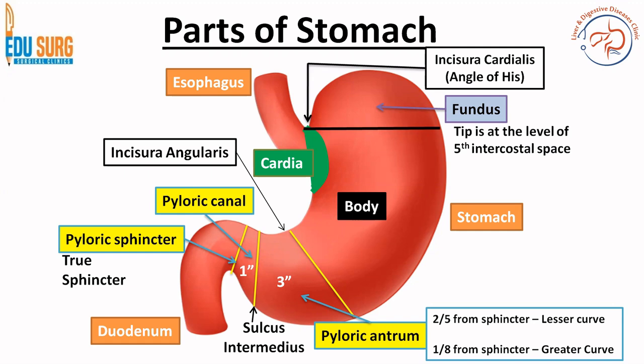So if you are asked parts of stomach, you have to talk in terms of: the cardia which is the beginning of the stomach; then the incisura cardia/fundus which is the part above the angle of His, the tip of which is at the fifth intercostal space; the body of the stomach — divide the lesser curve into 5 parts and greater curve into 8 parts. The lower two parts form the pylorus, and you have two important parts in the pyloric area: pyloric antrum and pyloric canal, which are separated by sulcus intermedius.